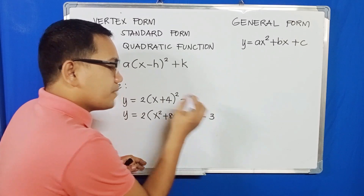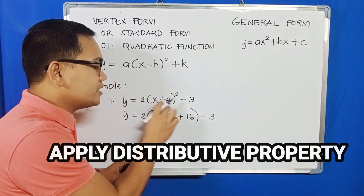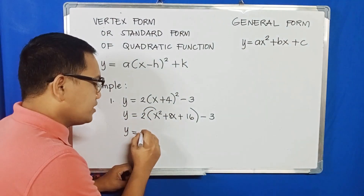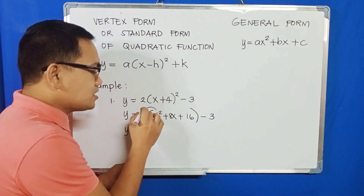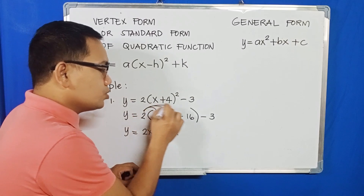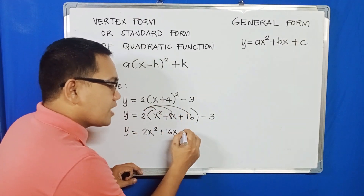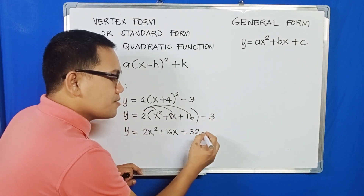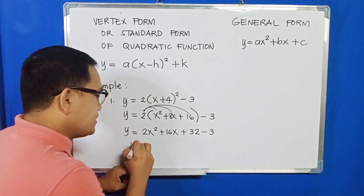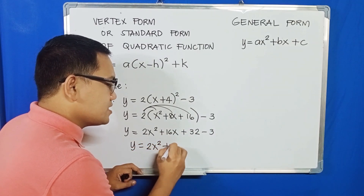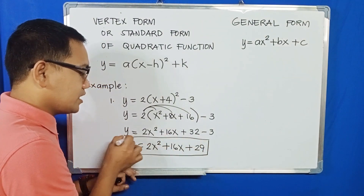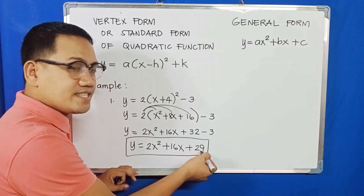Next, we distribute 2 to the terms inside the parentheses: 2 times x squared gives 2x squared, 2 times 8x gives 16x, and 2 times 16 gives 32. We copy minus 3. Combining the constants, 32 minus 3 equals 29. So y equals 2x squared plus 16x plus 29, which is the general form where a is 2, b is 16, and c is 29.